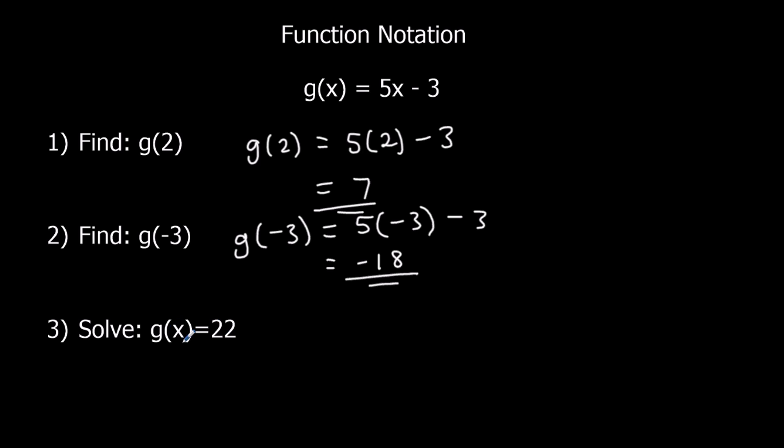And solve g of x equals 22. That means that's the output. What's the input? So 5x minus 3 is 22. Add 3 to both sides, that's 25. Divide by 5. We've got 5.